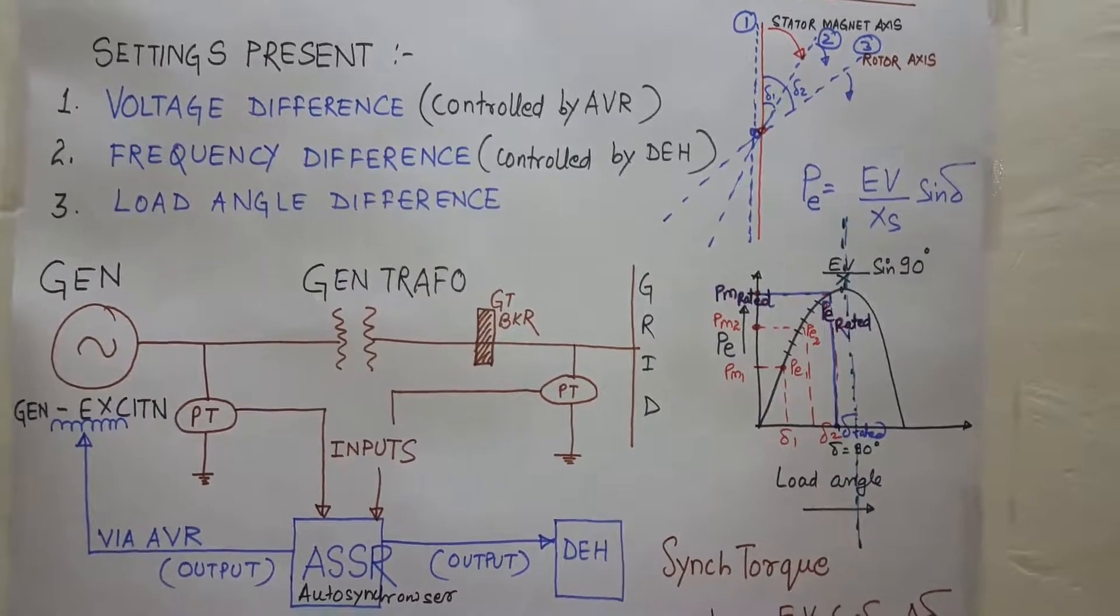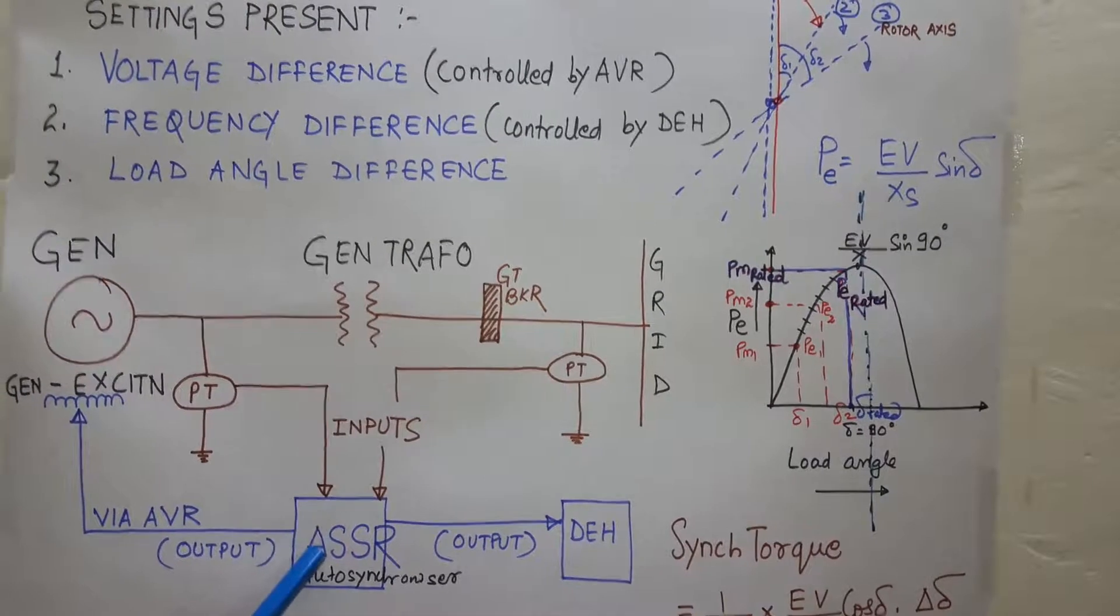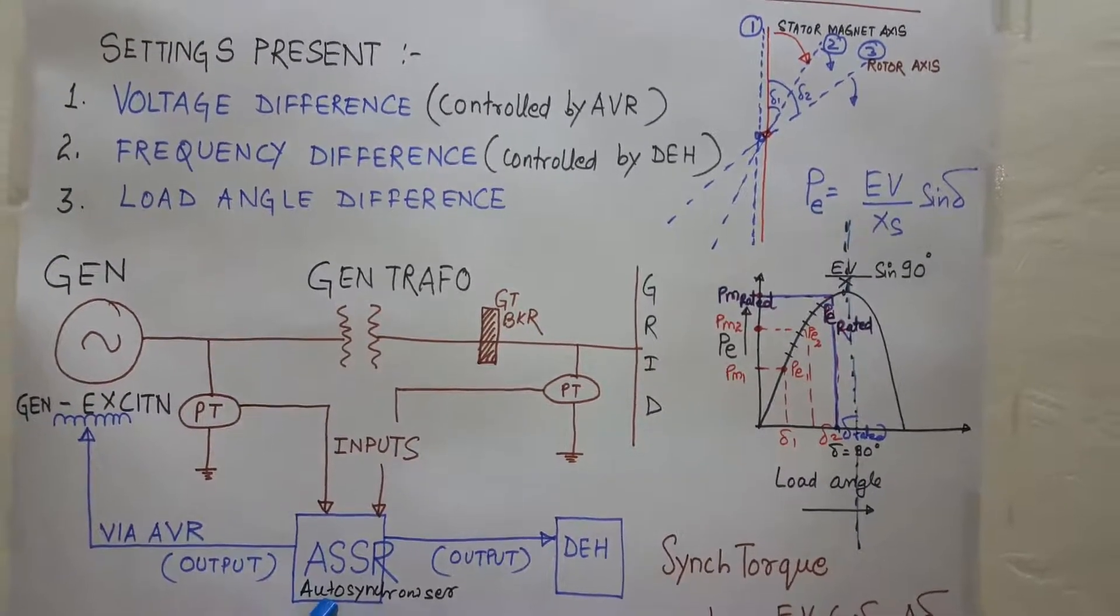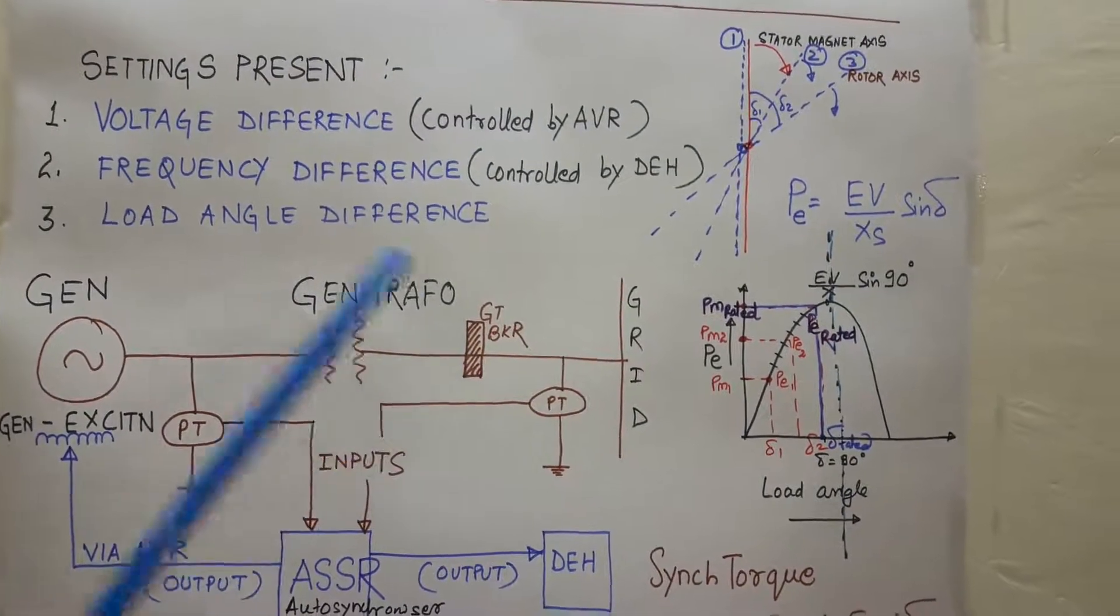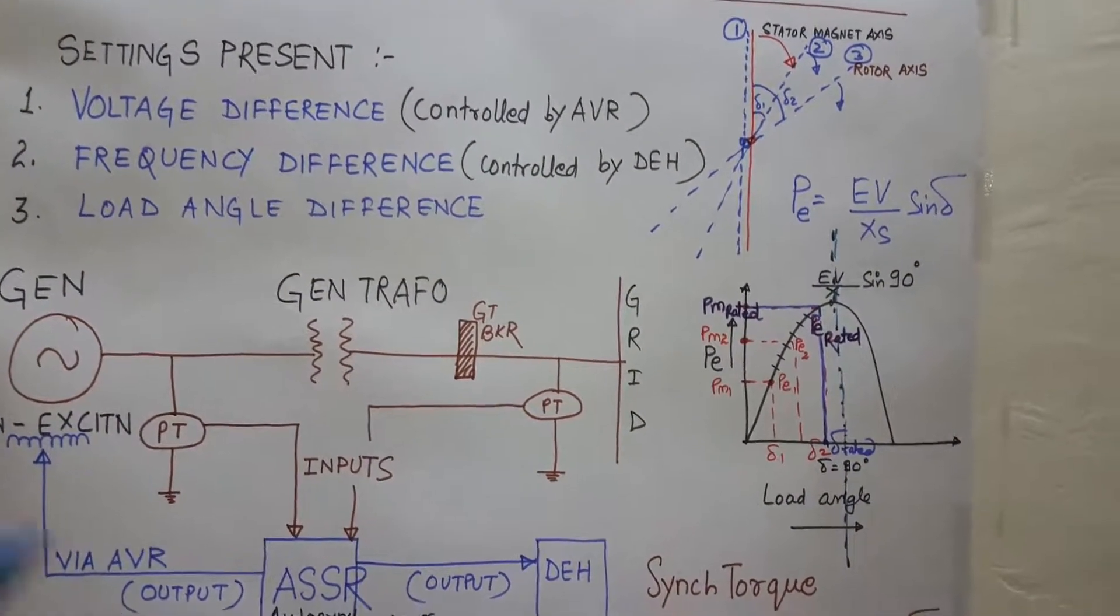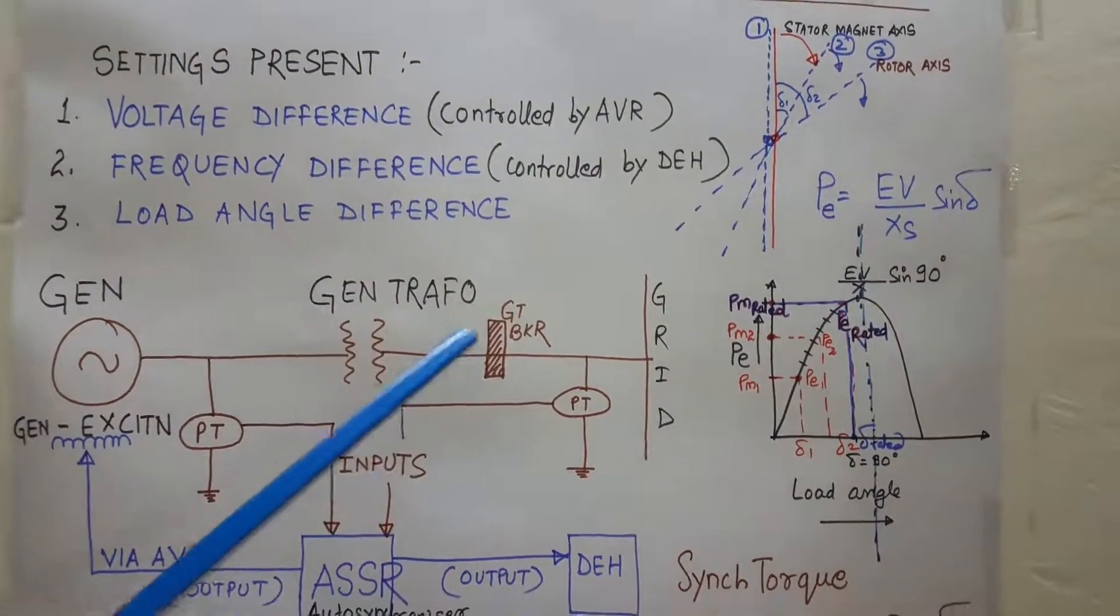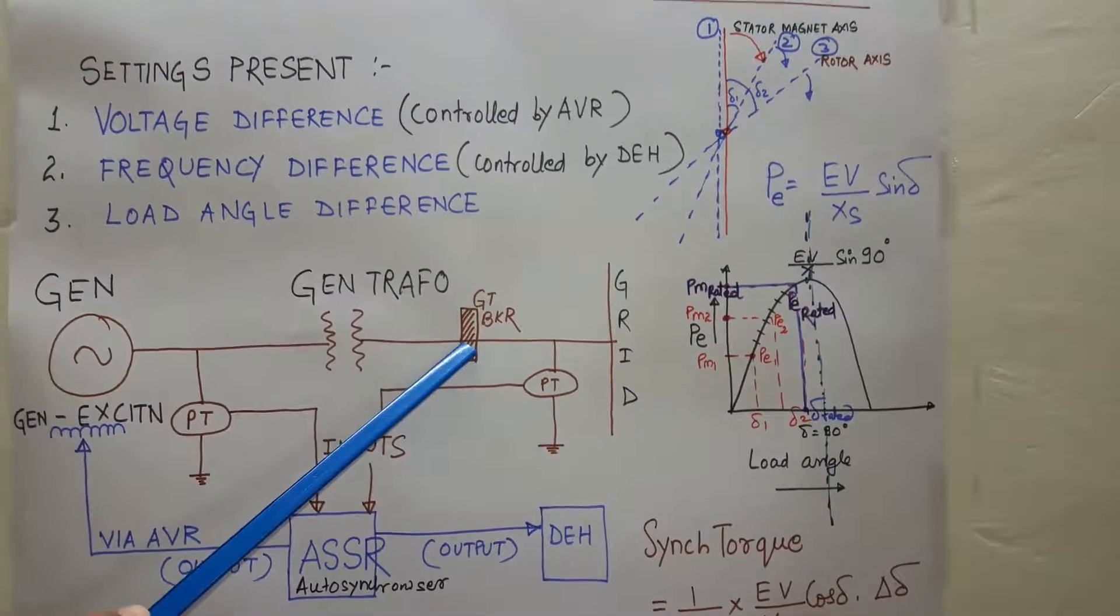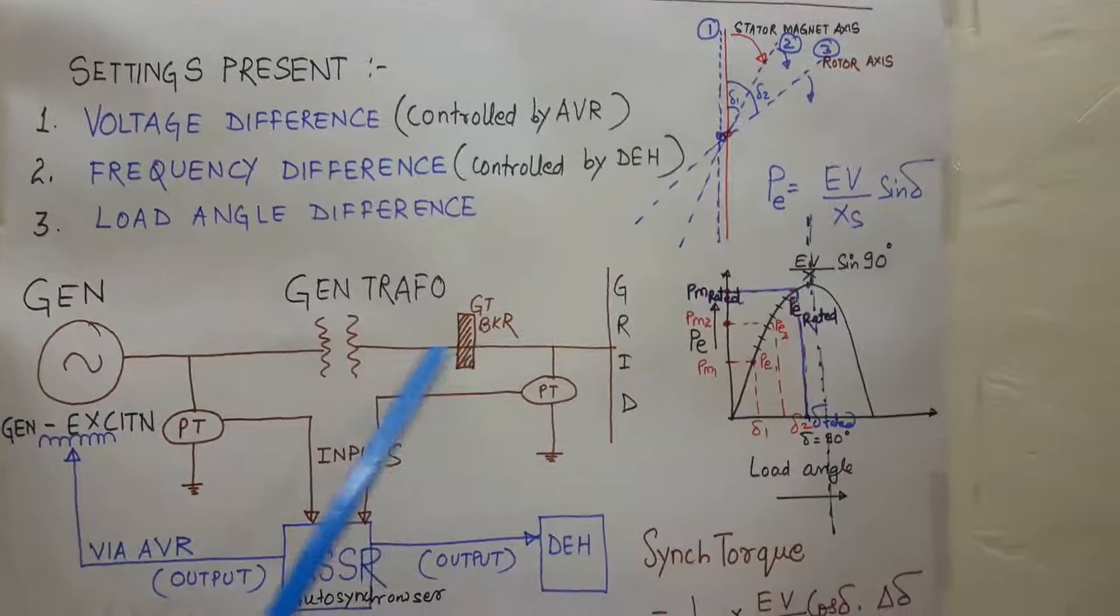Now auto synchronizer will go for synchronization. It will release one contact, and the contact is present in series with the closing circuit of the GT circuit breaker. So now the GT circuit breaker will get a close command and will close, and the generator will be synchronized with the grid by this GT breaker.